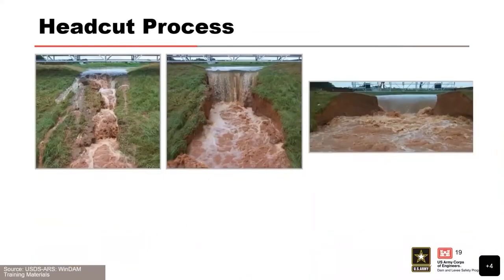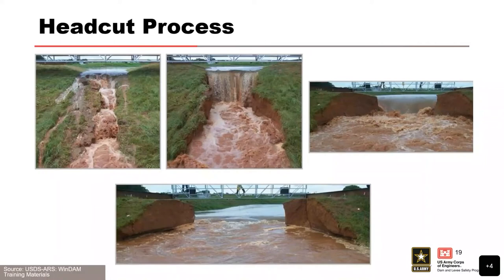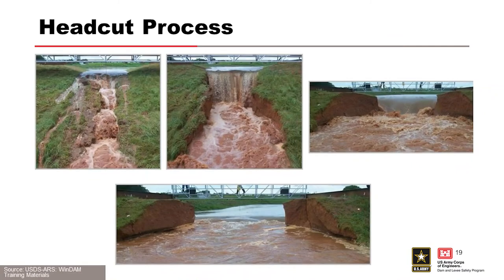These pictures illustrate an overtopping event and head cut initiation, migration, breach, and failure of an embankment at the ARS outdoor laboratory. The first picture illustrates initiation — there was some kind of nick point and a head cut has initiated. In the second picture, the head cut is actually migrating up toward the dam — you can see a vertical face and a waterfall coming over the embankment. Then we have an actual breach where the water level that was retained by the embankment is visible, and finally the failure where we've lost the pool retained by the embankment.